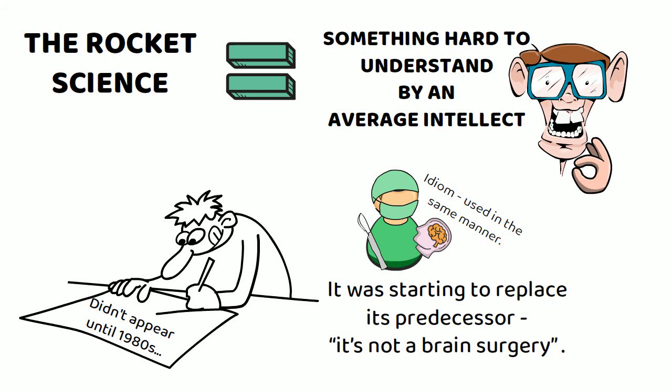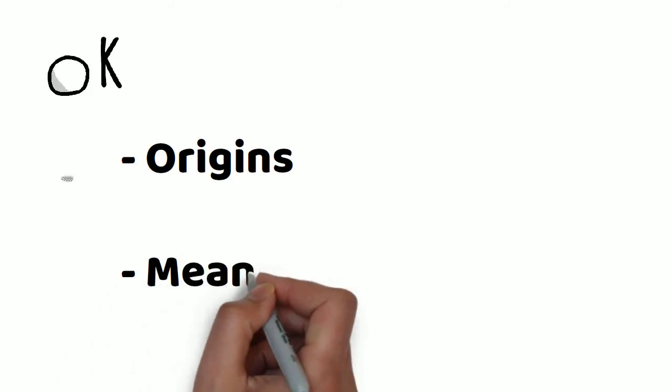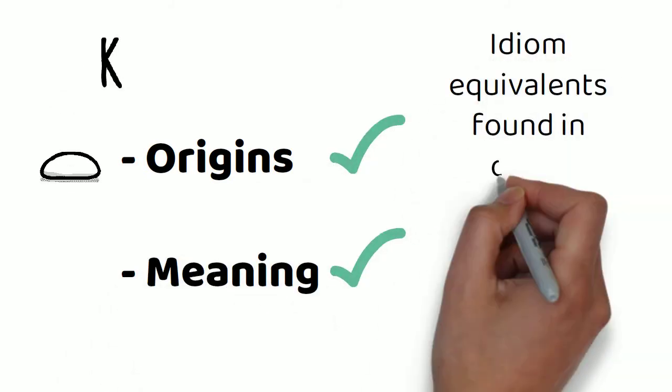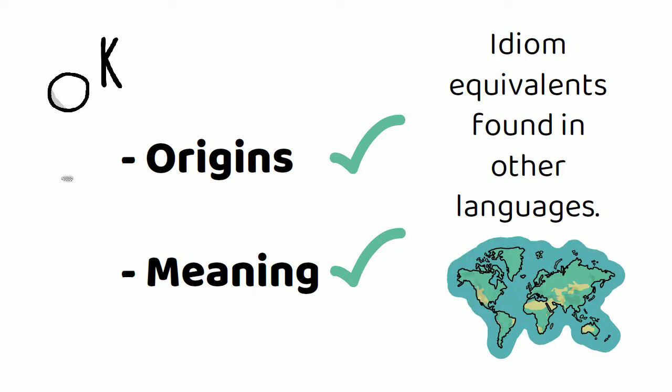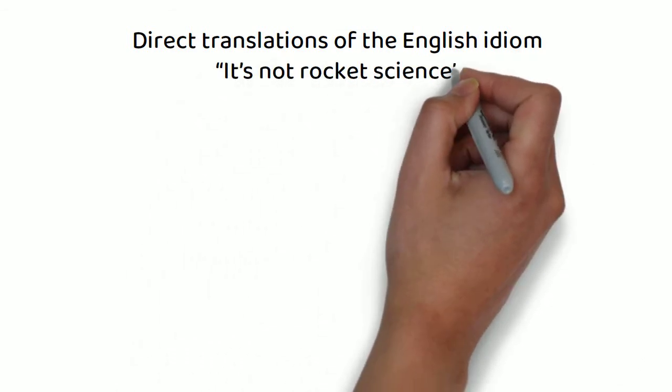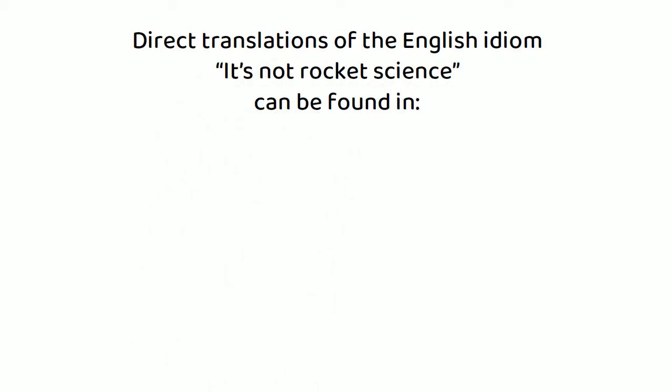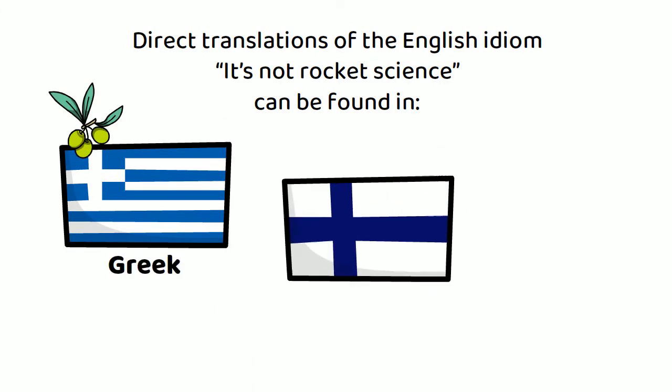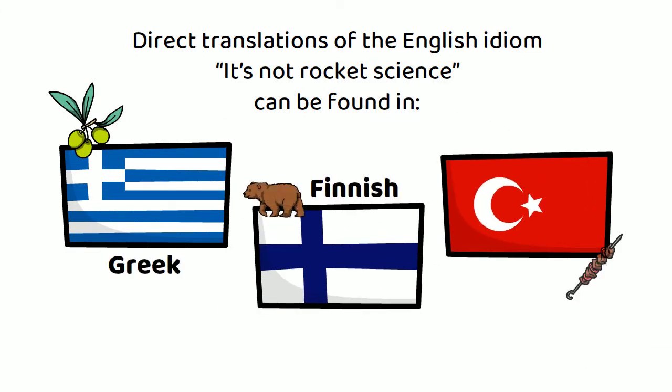Okay, we have now covered the origins and the meaning. Let's move on to the idiom equivalent found in other languages. The direct translations of the English idiom 'it's not rocket science' can be found in Greek, Finnish, Turkish, and many others.